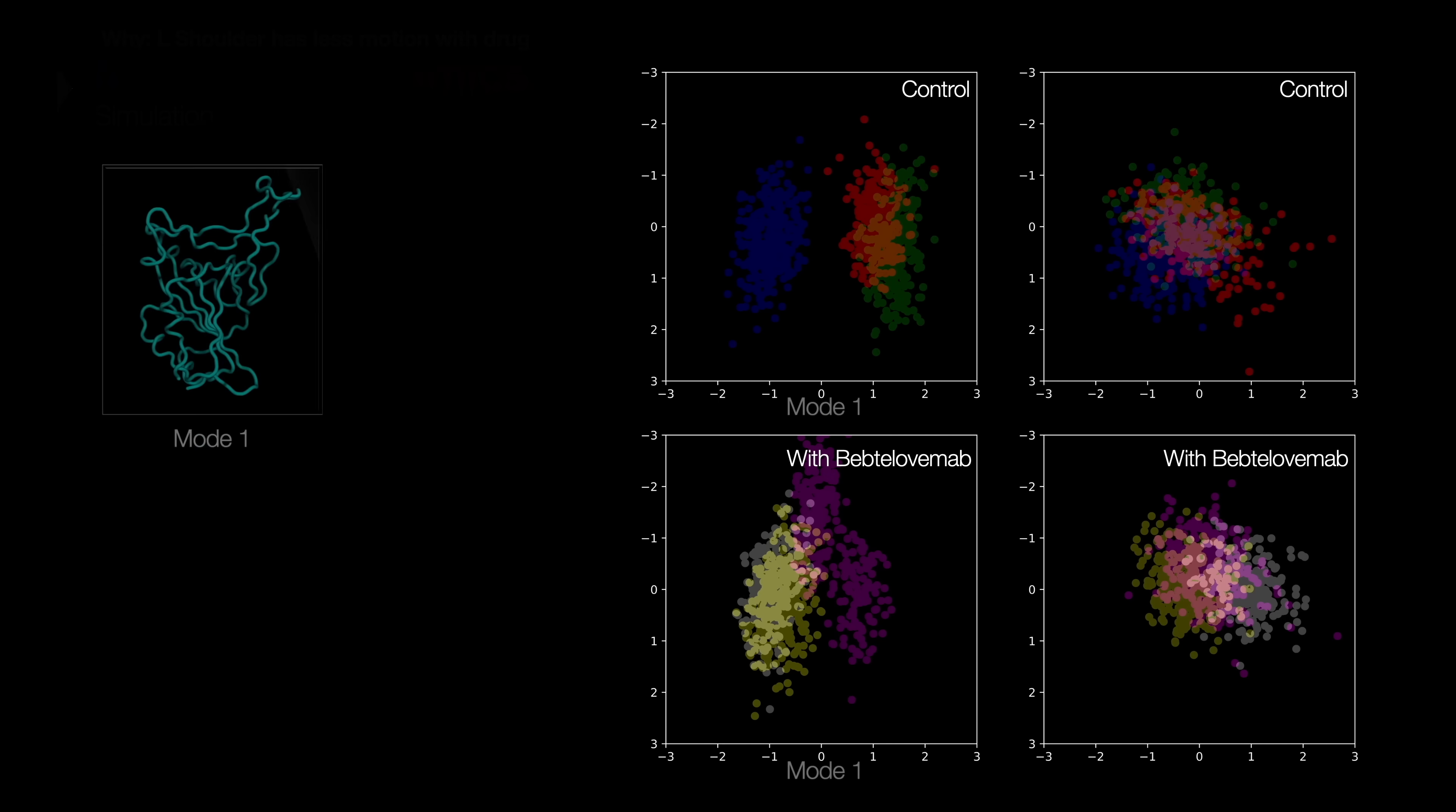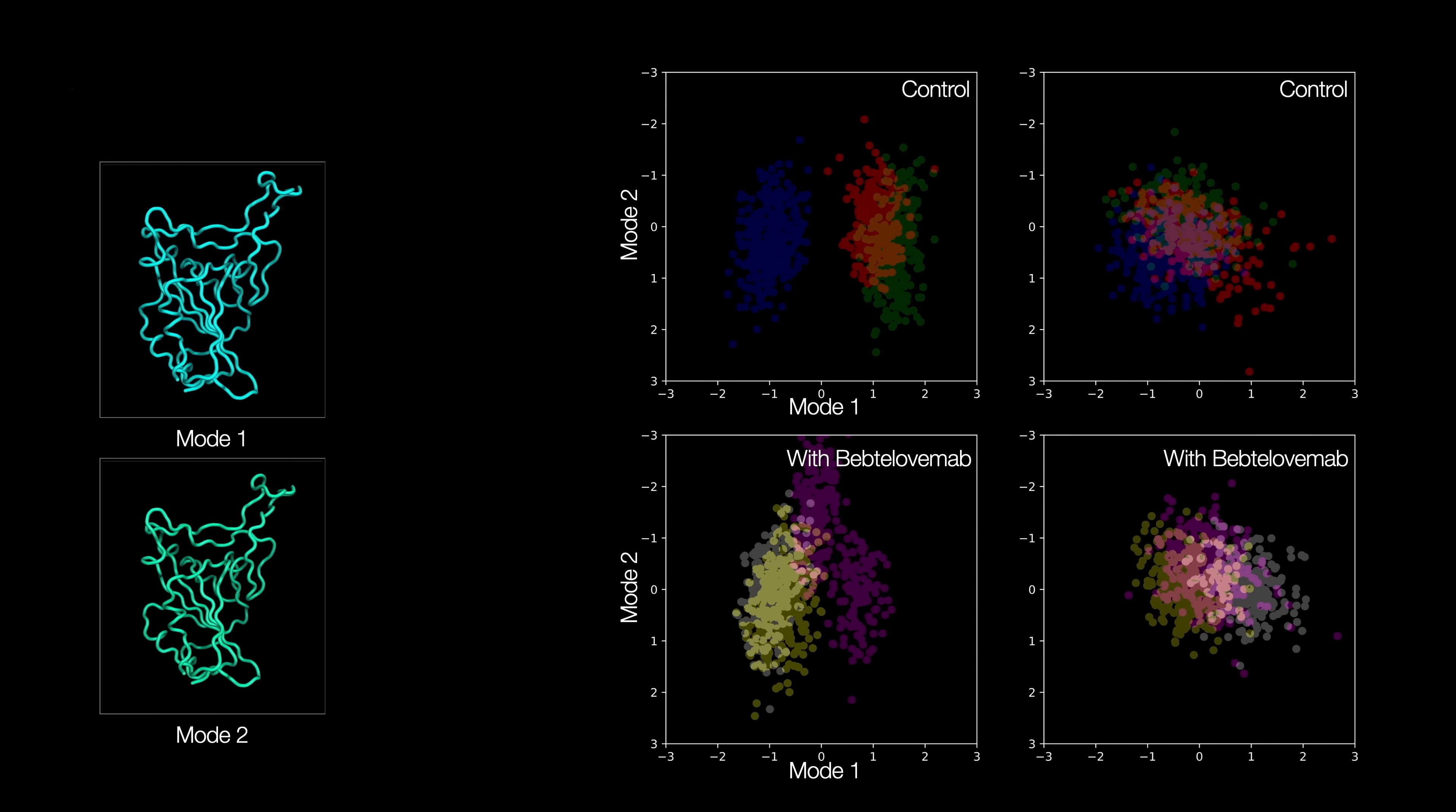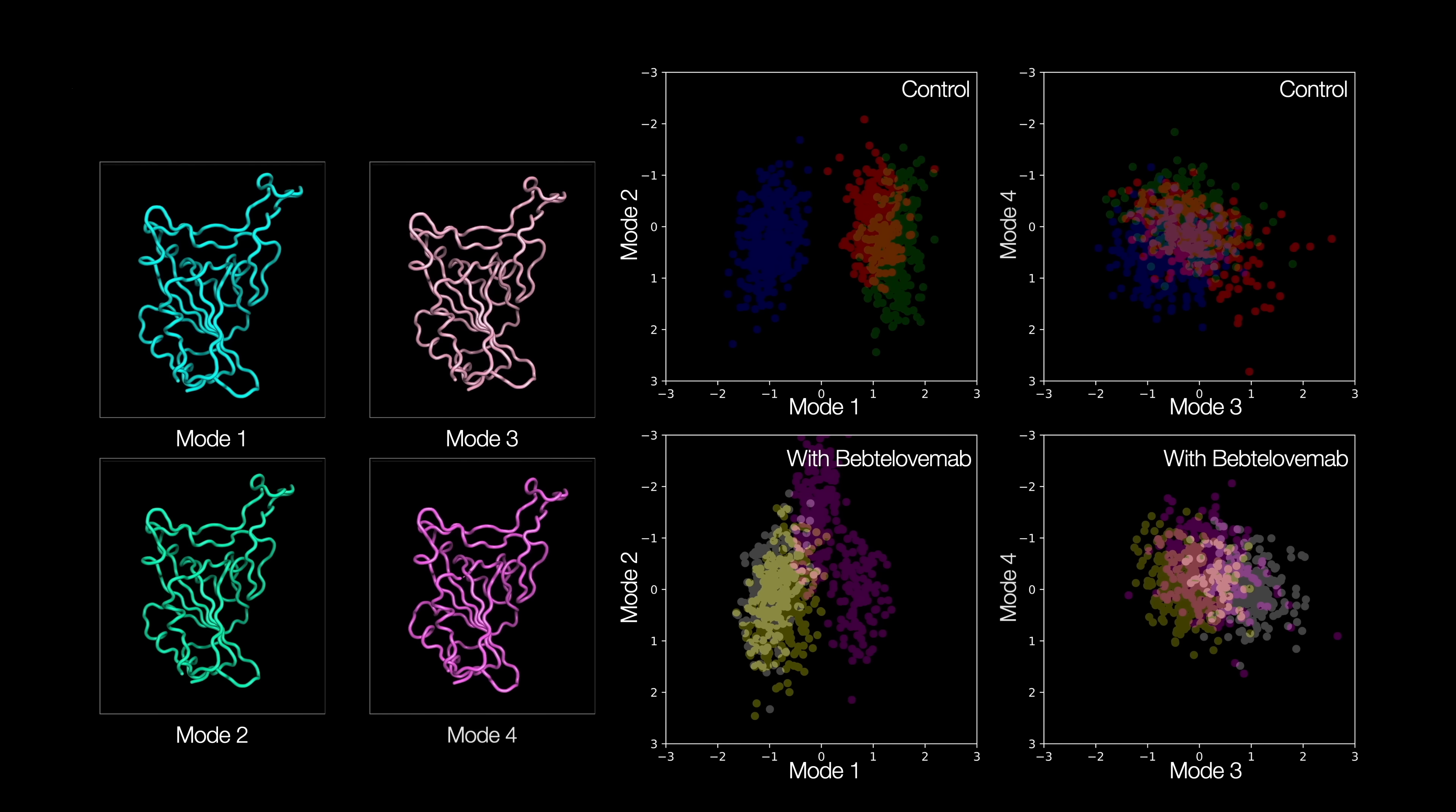Putting the movement data together, the PCA auto-classifies the essential modes of motion, and the four most important ones are shown here. In particular, the difference between modes 3 and 4 in the two versions tells us that, indeed, the binding causes the key to flop around less,